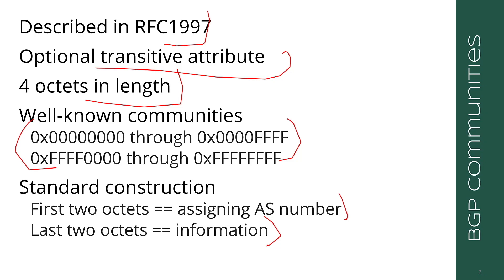Well-known communities fall within two specific ranges of community numbers. This is distinct from non-well-known communities because well-known means every BGP speaker should be able to process or understand them, while optional communities are things not every BGP speaker needs to understand. BGP speakers don't always have to process communities, but if they do, they must support all the well-known communities — not necessarily all optional communities. Let's look at two well-known communities that are quite useful.